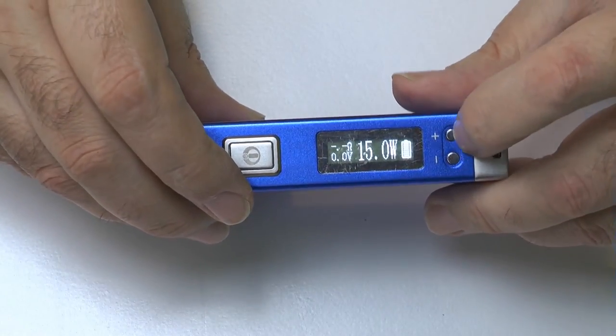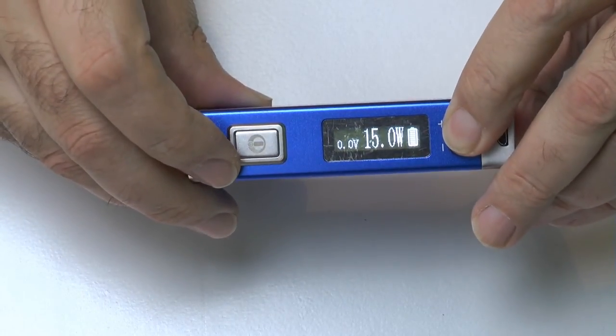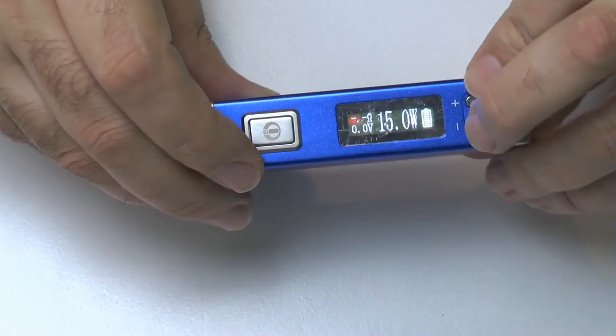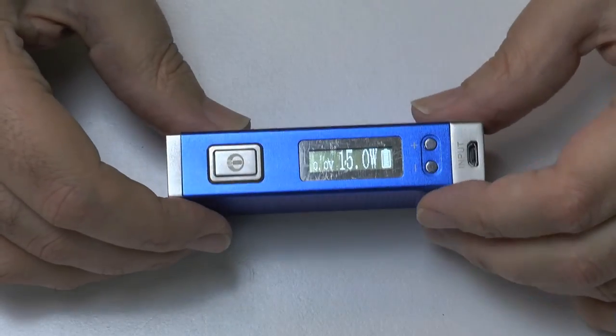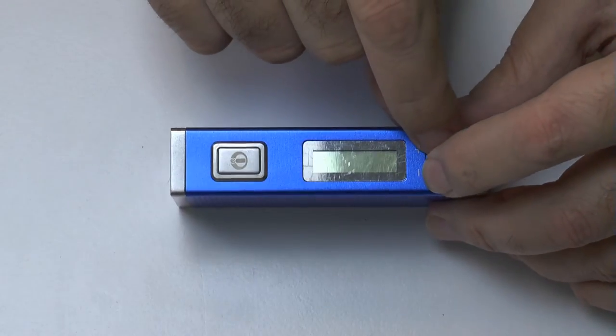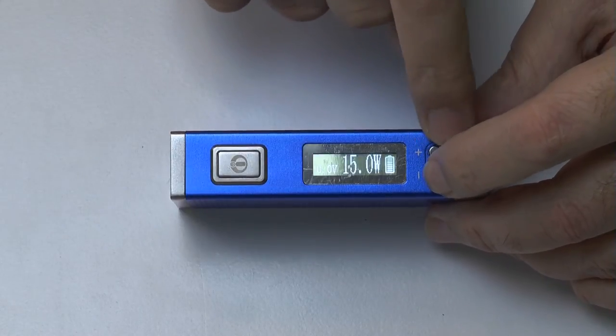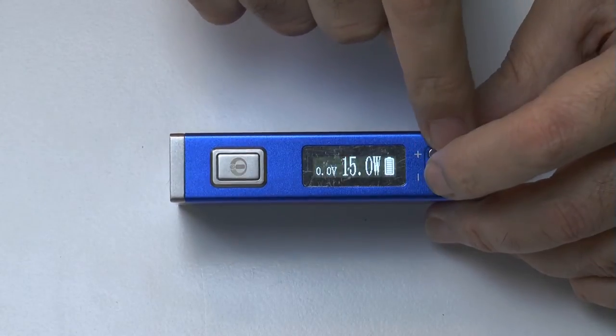If you hold the plus and minus together very briefly you will get your puff count. There you go, if you hold it down very briefly you get your puff count, the battery life left, and the resistance of your atomizer.